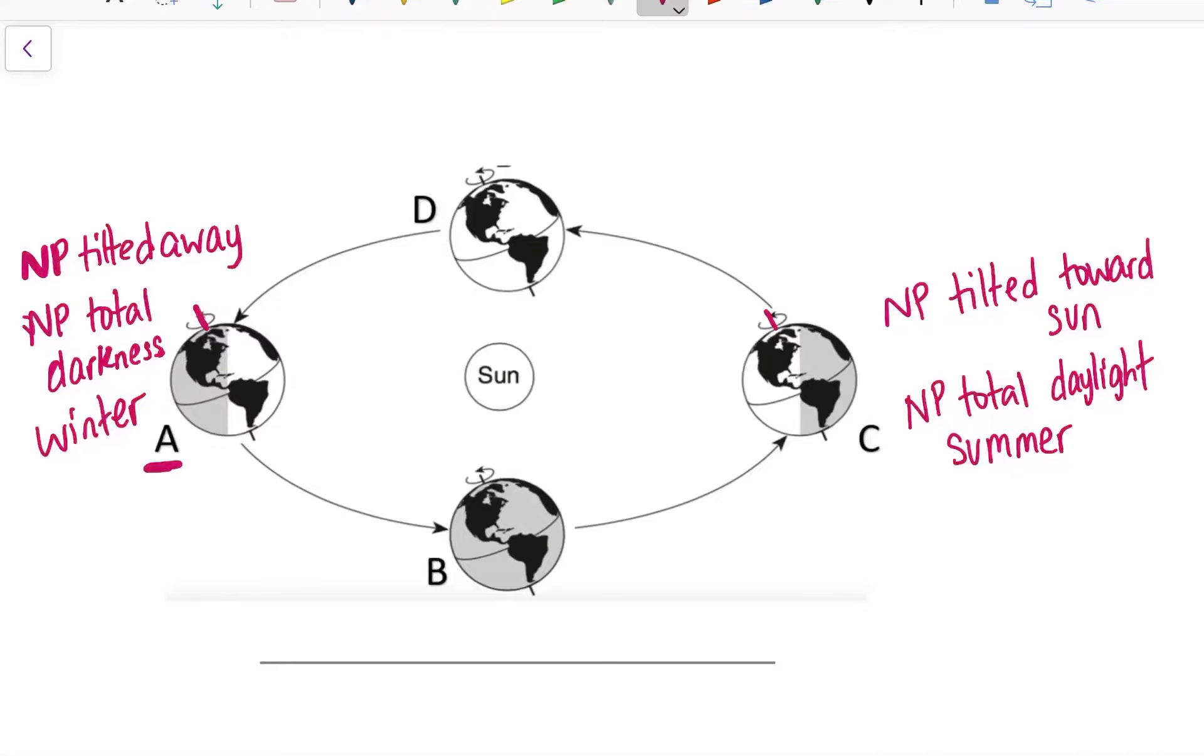Now that I've identified position A as winter and position C as summer, I can go back and look at B and D. B and D are tricky because they represent fall and spring and these two seasons always have the same characteristics and they're not really tilted toward or away from the Sun. They're just tilted off to the side, kind of parallel to the Sun.